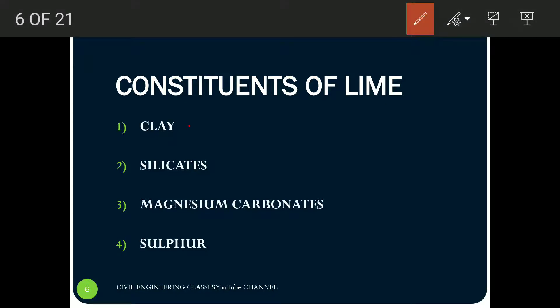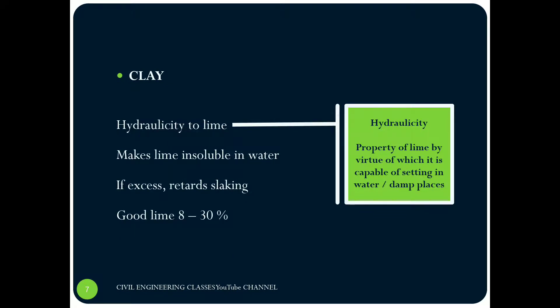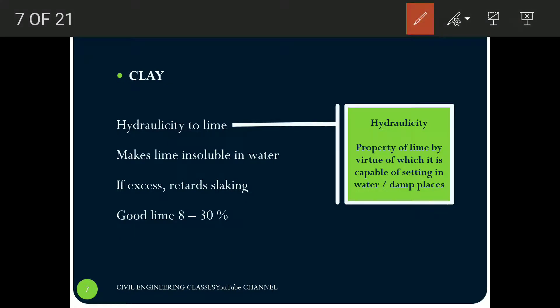Next are the important constituents of lime. The first one is clay, then silicates, then magnesium carbonate, and sulfur. Clay is responsible for providing hydraulicity to the lime. Hydraulicity is the property of lime by which it is capable of setting in water or in damp places — that means it can harden in the presence of water or in damp places.